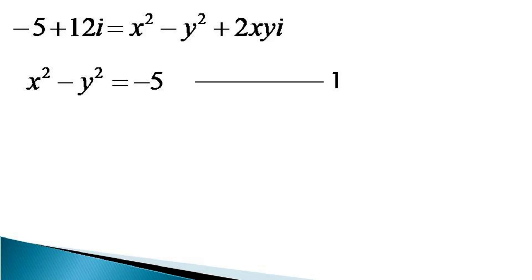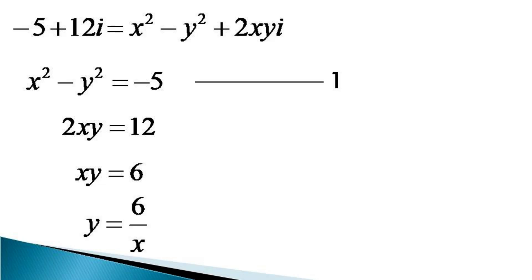The imaginary part on the right hand side is 2xy, and the imaginary part on the left hand side is 12. So 2xy becomes equal to 12, or xy becomes equal to 6, or y can be expressed as equal to 6 divided by x. This is our second equation.